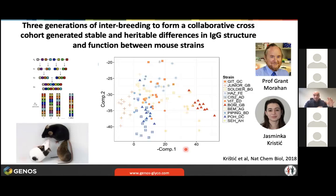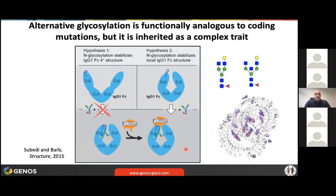By reshuffling genes, these mice generated biological and chemical diversity — a kind of micro-evolution on a very rapid scale, thanks to protein glycosylation. Something we must make people aware of: when we talk about alternative glycosylation — having a different glycan structure on a given glycosylation site — most of the scientific community still thinks this may be irrelevant. But actually, alternative glycosylation is, in a functional way, analogous to coding mutations. You have a change in protein structure, but not encoded in a single gene and not inherited in a Mendelian way, but as a complex trait by reshuffling allelic variants.